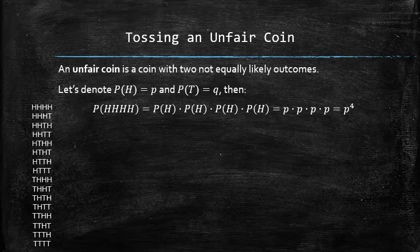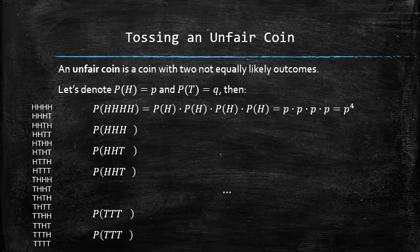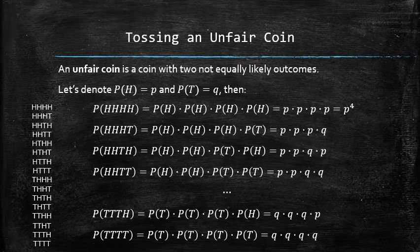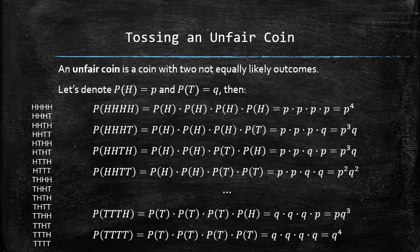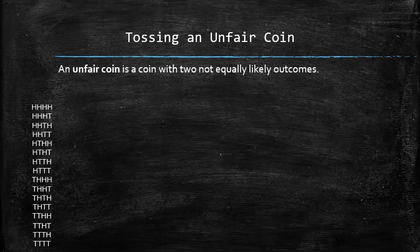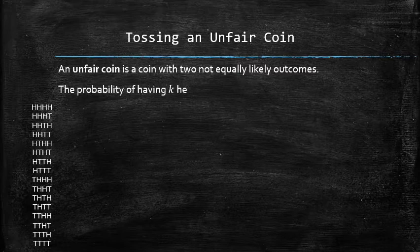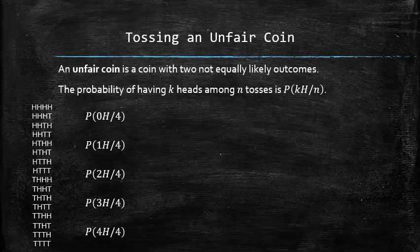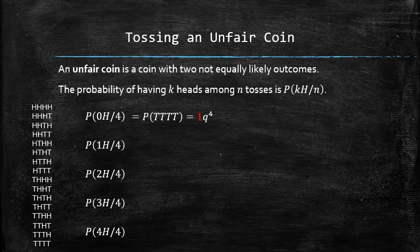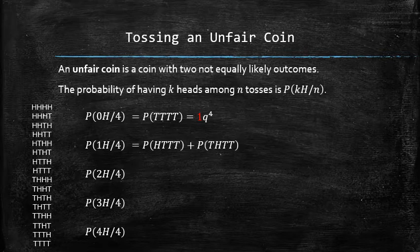Similarly, we can find the probabilities of all simple outcomes using the special multiplication rule. Note that the probability of a simple outcome depends only on the number of heads and tails in that outcome. The probability of having zero heads among four tosses can be found by finding the probability of all tails, which is q to the power of 4. The probability of having 1 head among 4 tosses can be found by the special addition rule and is equal to 4·p·q³.